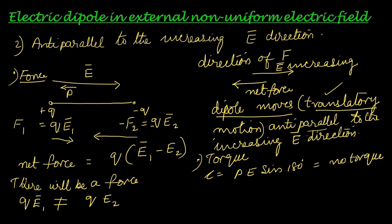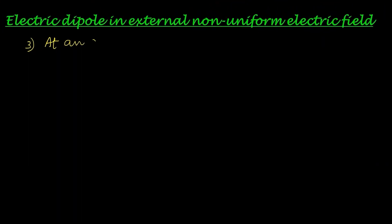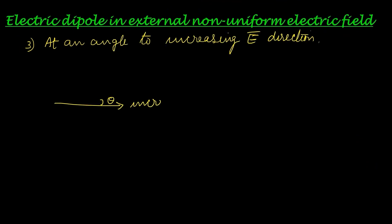In both cases the direction of translatory motion is along the dipole moment direction. When the dipole is resting parallel to the increasing electric field, the motion is in the direction of the electric field. When it is resting anti-parallel to the increasing electric field, the motion is anti-parallel to the electric field direction.